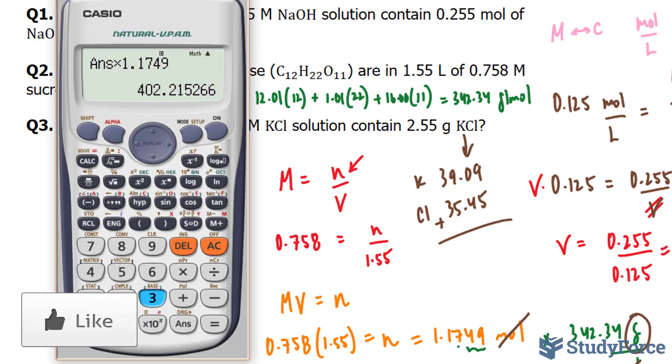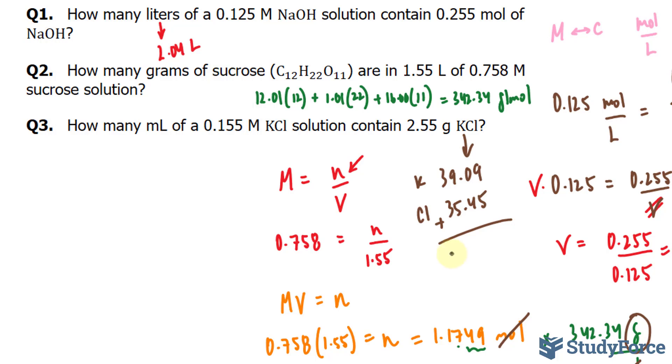So adding these numbers up, let's use our calculator: 39.09 plus 35.45. This gives us 74.54 grams per mole.